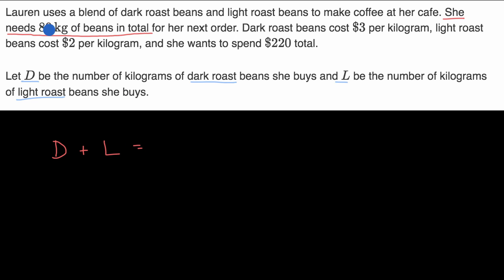What I just underlined says it needs to be 80 kilograms in total — so that needs to be 80. This number of kilograms plus this number of kilograms is going to be equal to your total number of kilograms. So I have one equation with two unknowns. Let's see if we can get another one.